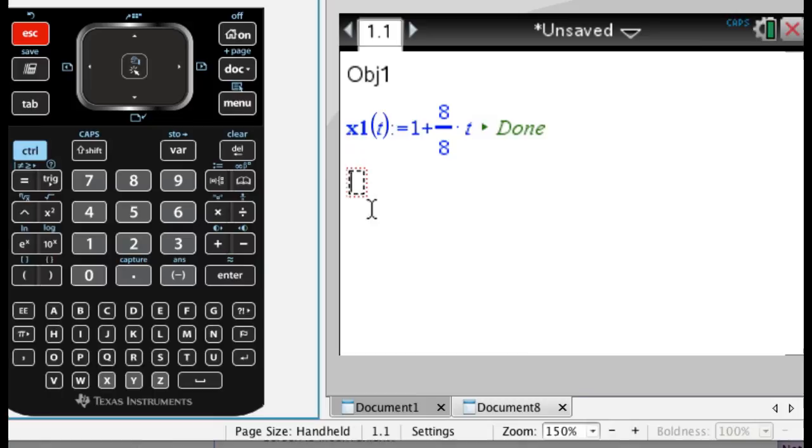When you press enter it also creates a new math box for you. So let's define y1. We'll have x1, y1 all set up. This will be y1(t) = 2 + 12/8*t. Okay, so I get that. So that's object 1. Both of those are now stored as variables.